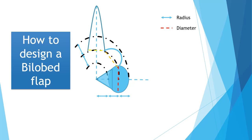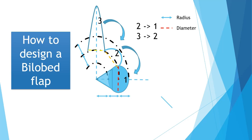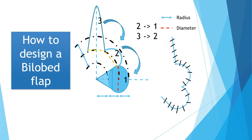Next, excise the triangle where you triangulated your defect. After undermining the flap, move the second flap into the first defect and the donor flap into the second defect. When done, you will have a scar which you close with interrupted sutures. And that is your bi-lobed flap.